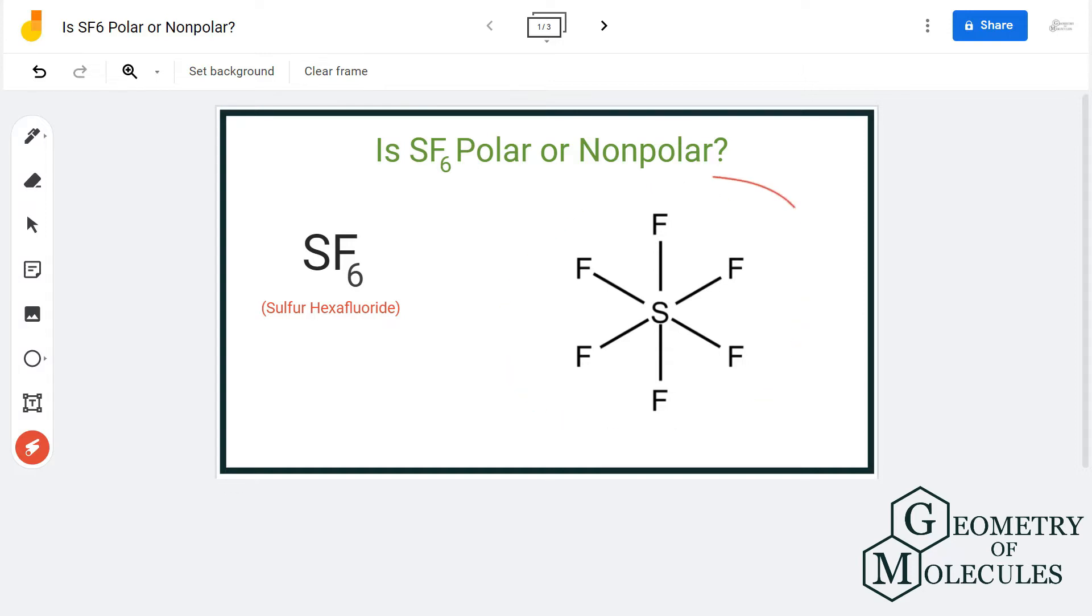So here is the Lewis structure of SF6 molecule, in which one atom of sulfur is forming single bonds with six fluorine atoms. The polarity is determined by the net dipole moment in the molecule.